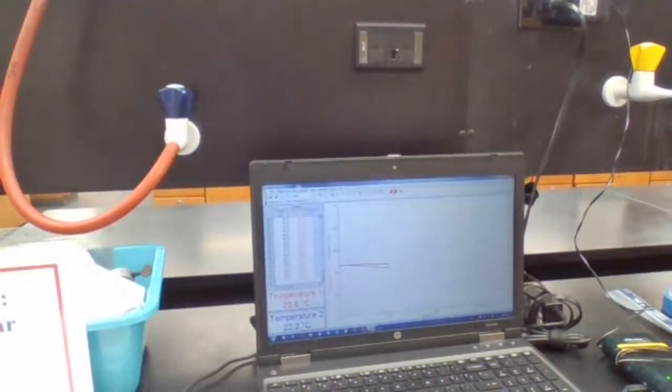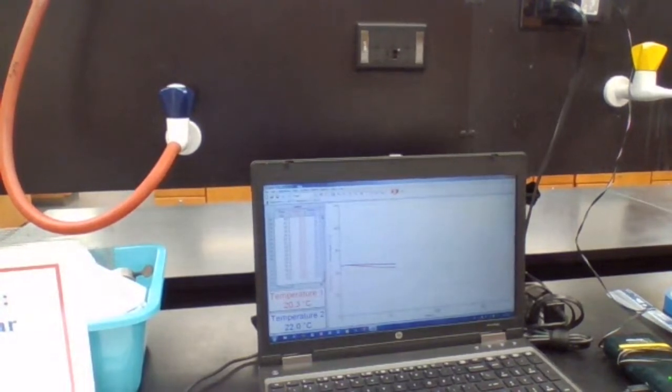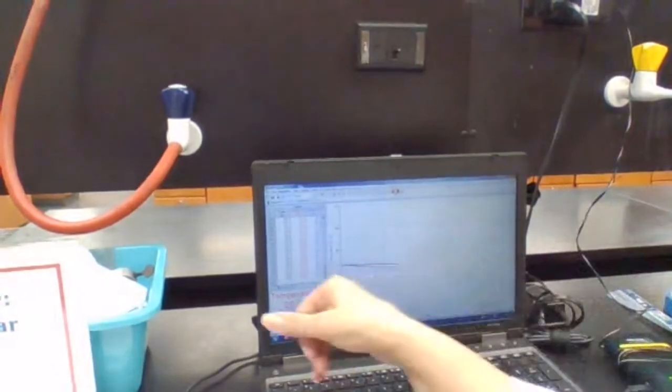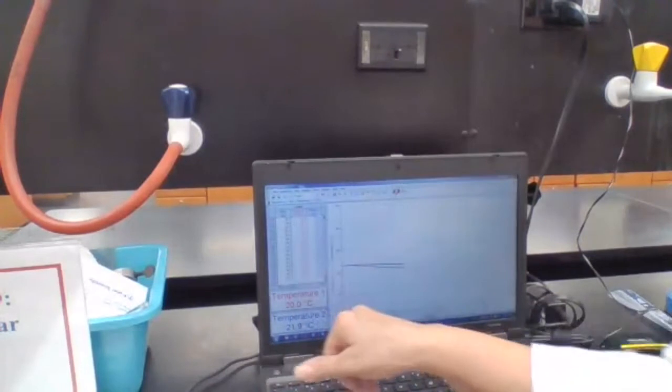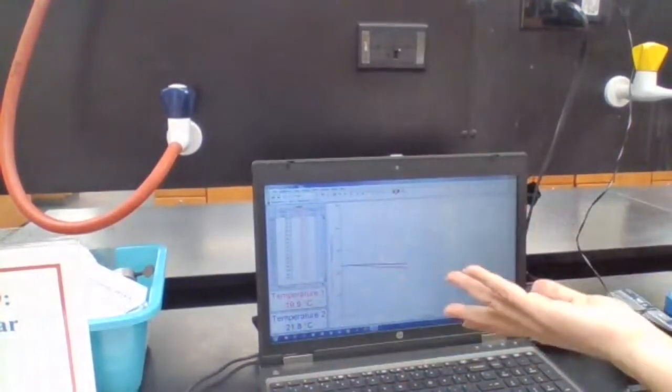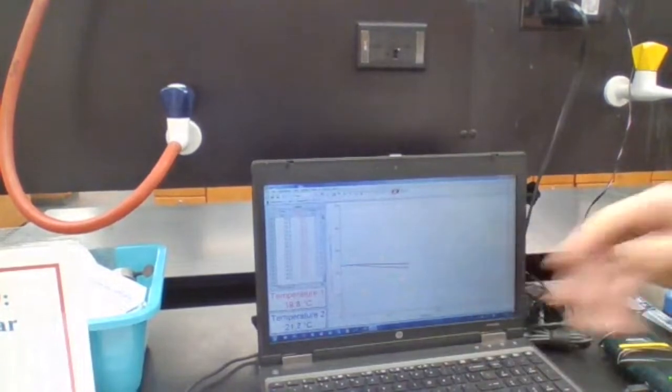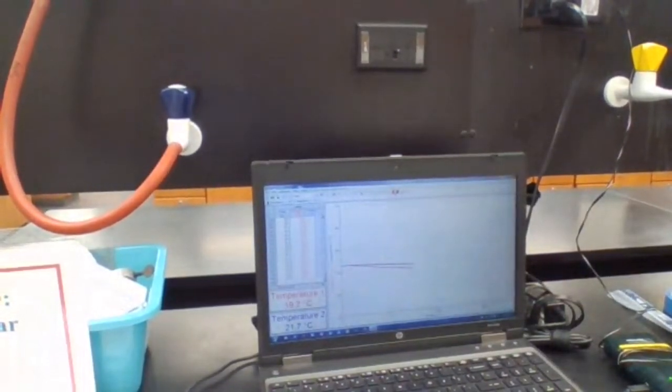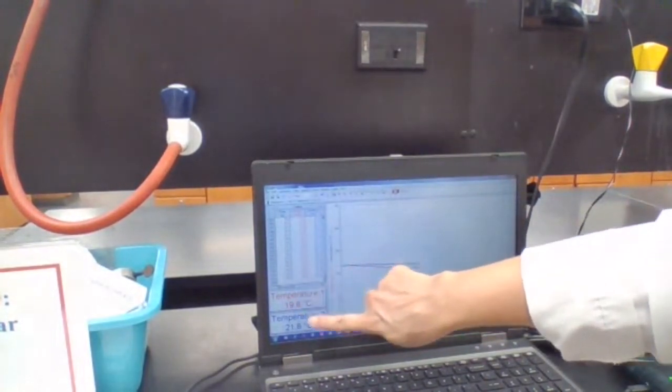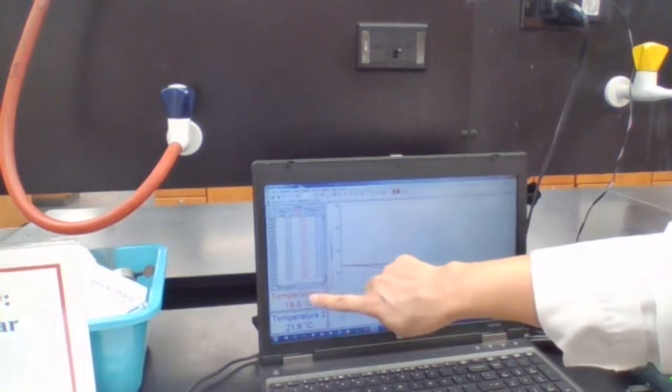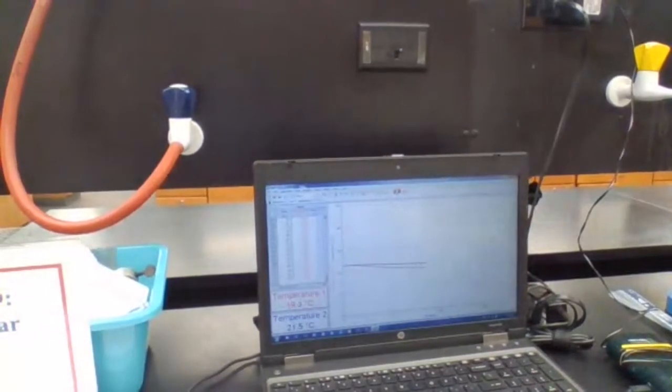Both of them start with 23.1. Now propanol is 20.2, but butanol is 21.9. It has not reached plateau. I'm not ready to stop yet. I'm waiting for the temperature to reach plateau, but I'm just saying the change in temperature for propanol is more significant than butanol because propanol is a lighter molecule. It has three carbons. Butanol has four carbons.